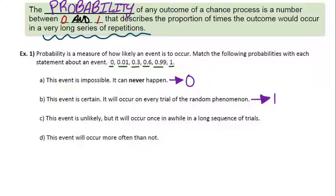Part C, this event is unlikely, but it will occur once in a while in a long sequence of trials. So, in a long sequence of trials, it will happen, but it's rather unlikely otherwise. So, it should be a lower probability, it can't be 0, because it will happen. So, either 0.01 or 0.3.